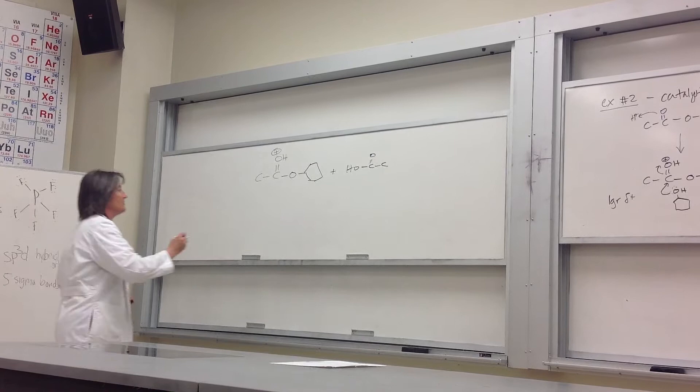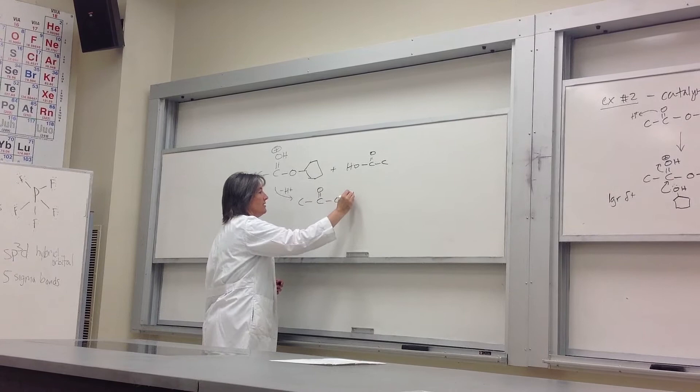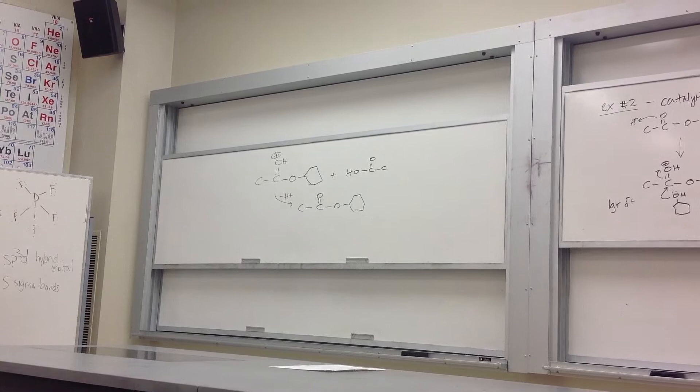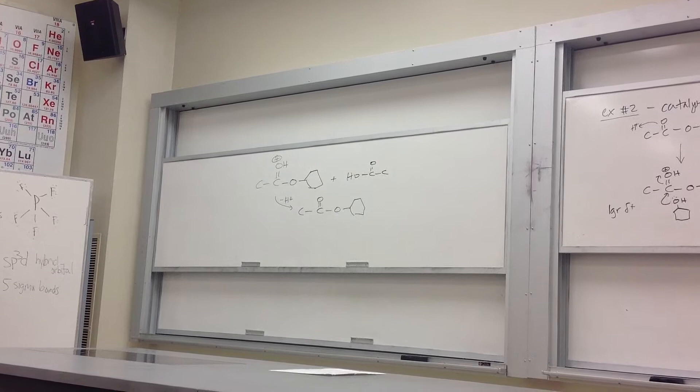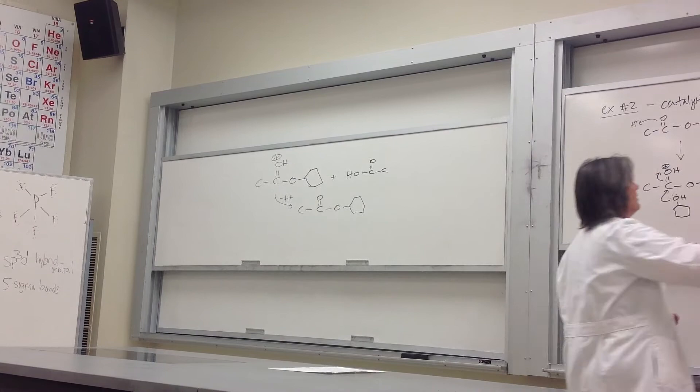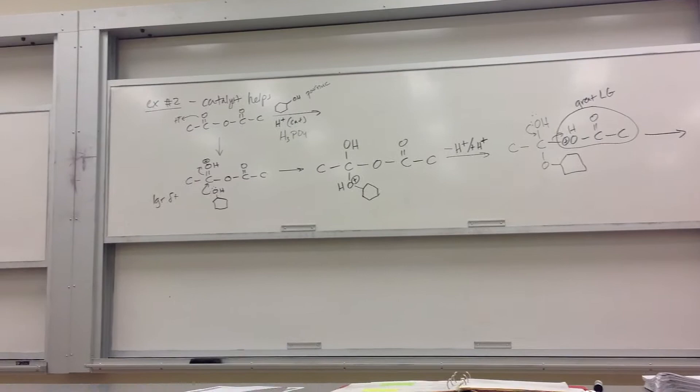One more minus H+ step and we're done. Treating an anhydride with an alcohol gives you an ester — just like it did with an acid halide. In this case it's helped along a little by H+. When H+ leaves, it's just going off as part of the counter ion — like H3PO4 regenerates.